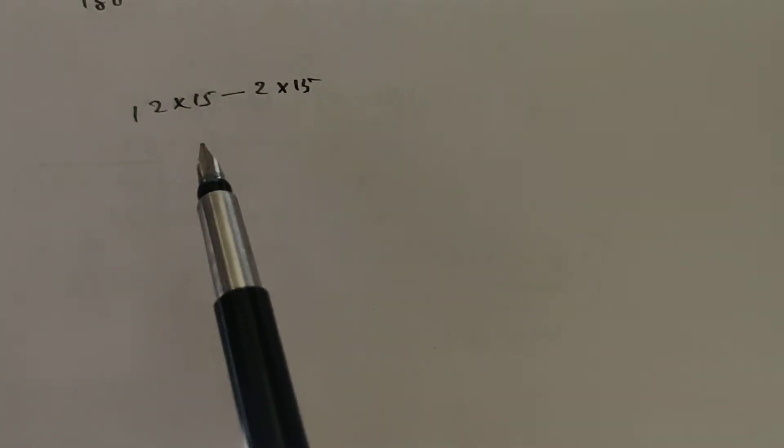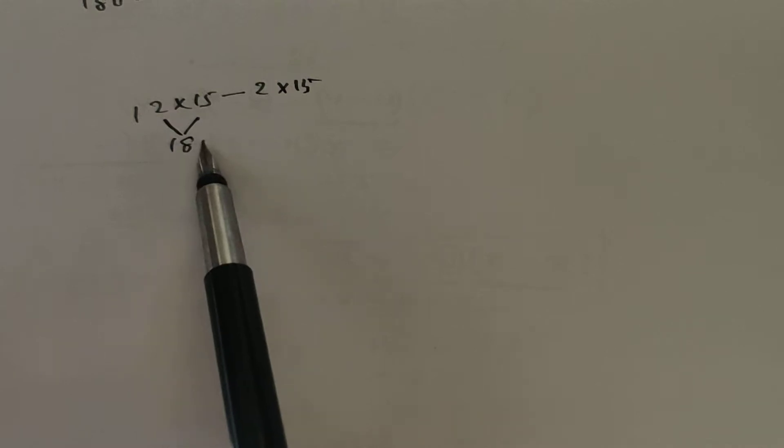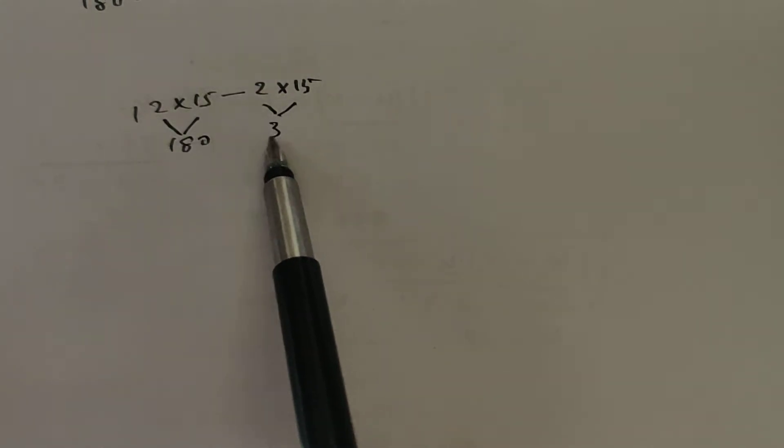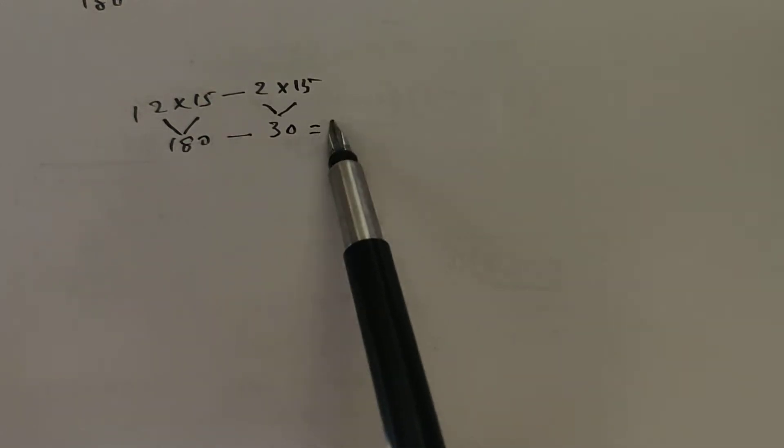Next, we want to find more identities in this chapter. Another calculation. We can discuss 12 into 15 minus 2 into 15. How do you do this problem? First of all, what is 12 into 15? You know that is 180. And then calculate 2 into 15, that is 30. And the difference: 180 minus 30 is equal to 150.